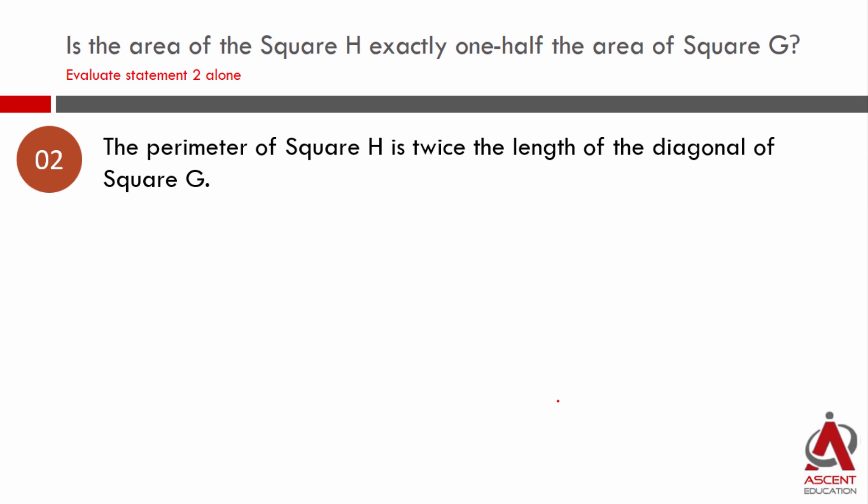Statement 2: The perimeter of square H is twice the length of the diagonal of square G. I will go to the question stem. Side of square G is equal to 4, so that area is 16 square centimeters, the area of square G. Now let's go to statement 2.